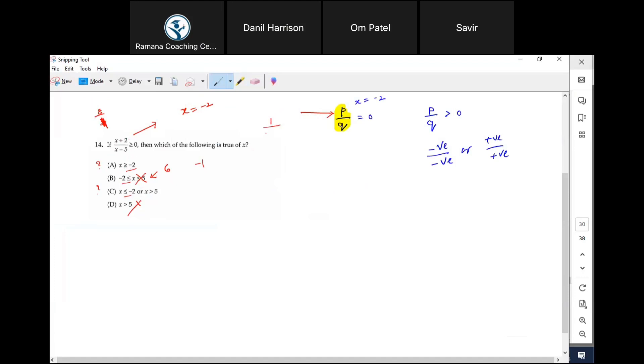And then negative one minus five - is that a positive? No. That means x cannot be greater than negative two. It has to be less than negative two. That's your answer, got it?